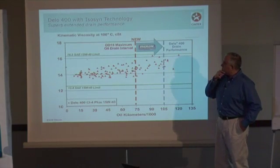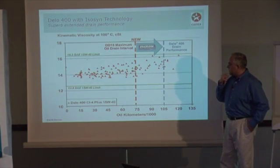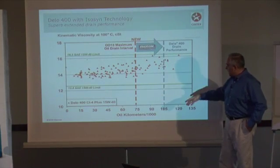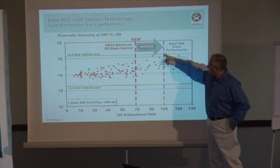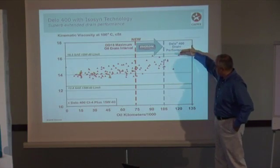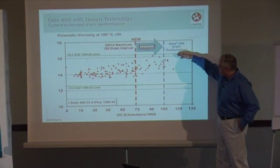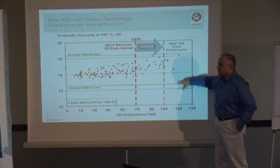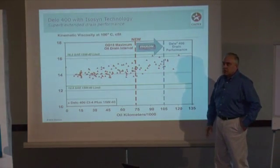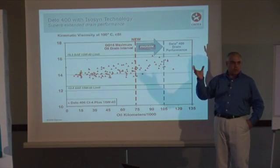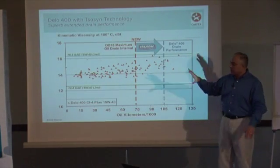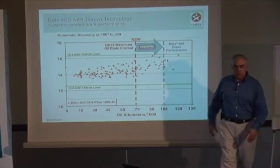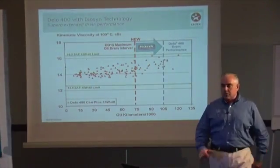Maximum oil drain interval for the DD-15 is 75,000 kilometers or 50,000 miles. And as we indicated, we're getting out past here. From a viscosity standpoint, we're actually starting to hit probably the upper limit somewhere in the 115,000 to 120,000 kilometer range. So we talk about how we formulate Delo 400 — now this is starting to become the question of how does it actually work in the field, and we can answer that with our used oil analysis.